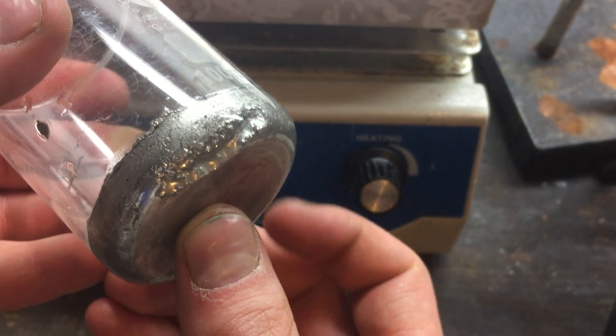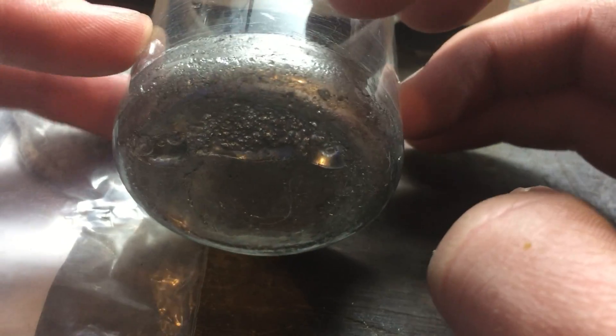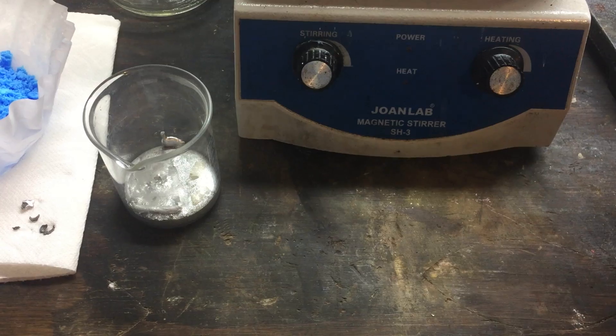The metal remained liquid for a long time and once it was solid, it was quite difficult to remove from the beaker. However, I eventually managed to get it out.